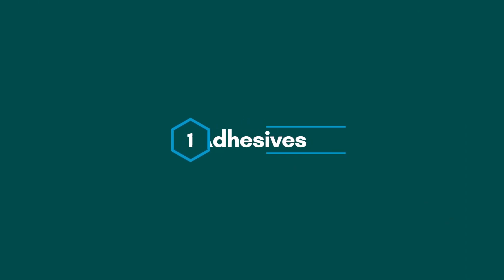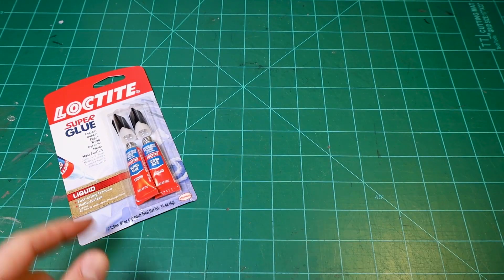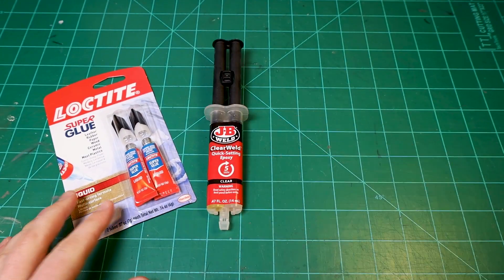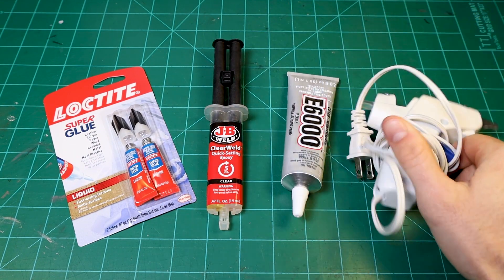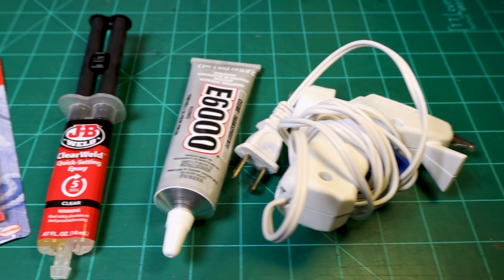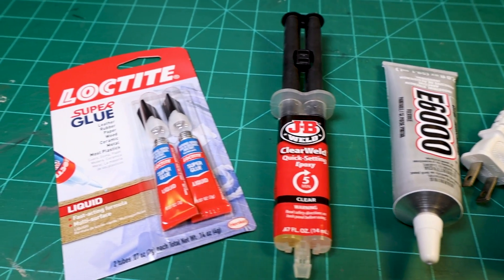Method number one: adhesives. Now this might seem obvious, but adhesives are a great option when it comes to quickly and easily joining parts together for several reasons. First off, there are a bunch of different types of adhesives like superglue, epoxy, E6000, and good old fashioned hot glue.